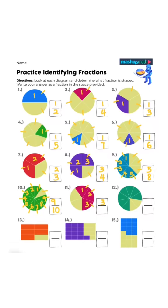One two three four five — three fifths. One two three four five six seven eight nine — seven ninths. One two three four five six — five sixths.